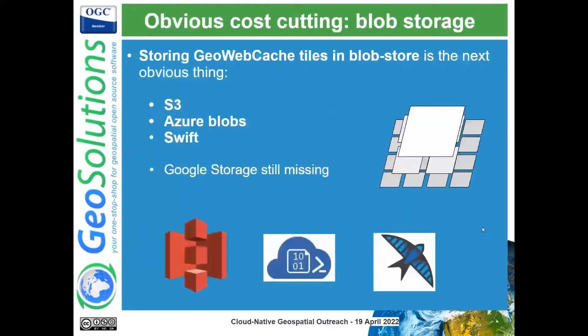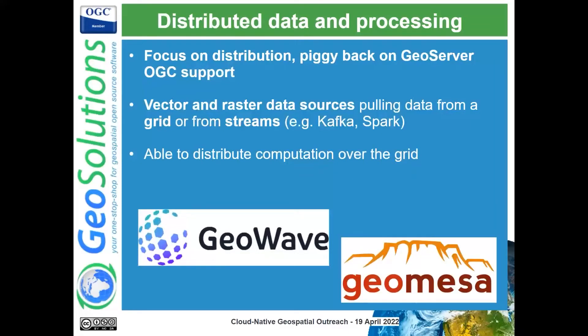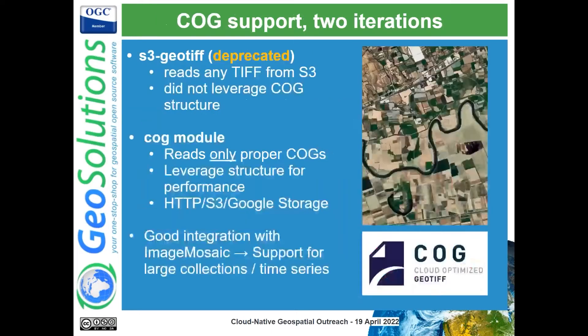Then GeoWave and GeoMesa started piggybacking on GeoServer to get OGC protocol support. GeoWave and GeoMesa both support distributing data over a computational grid and distributing calculation, and they are typically deployed on the cloud. GeoServer was acting as an OGC front-end for these two systems, supporting most protocols but typically WMS, WMTS, and WFS with possibly some WPS support.